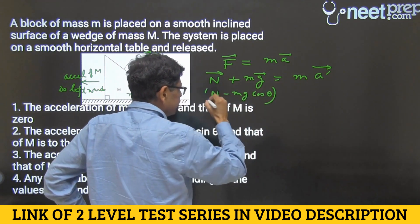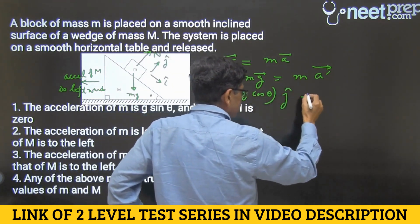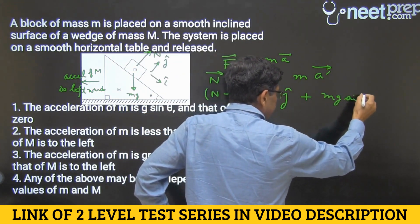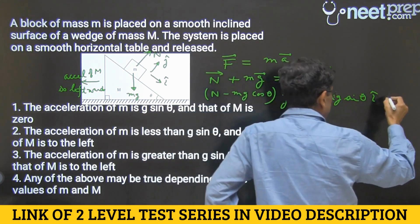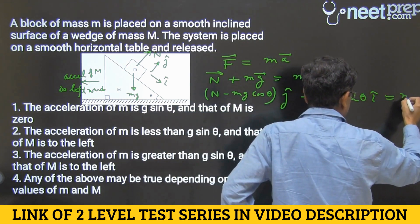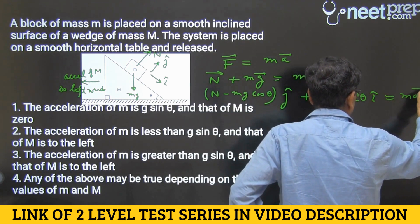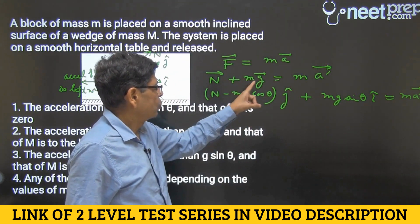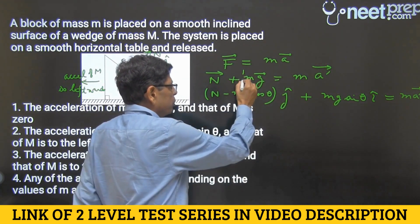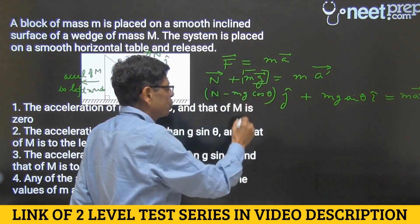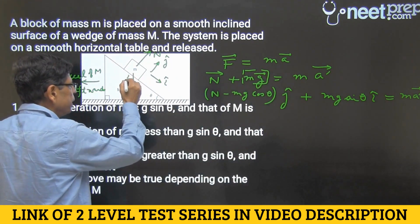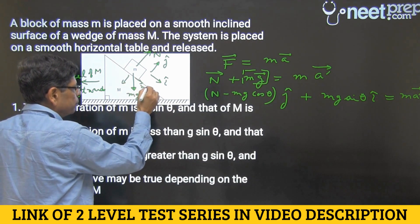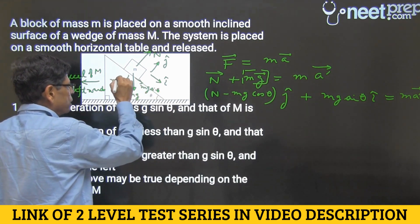j cap plus mg sin theta i cap, and the right hand side stays like it was: m into a dash vector. In this step all I have done is resolve the gravity's force mg into two components - one this way mg cos theta and one this way mg sin theta.